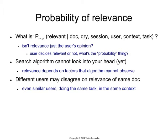Another way to think about how the probability arises is: you could have different users issuing the same exact query and having very similar-looking search sessions, but they could disagree on whether any particular document is relevant to their information need or not. So that's a factor that a search engine cannot control. One way to think about what the probability of relevance means is: out of the population of users who run these queries and look at these set of results, how many of them would judge a particular document as relevant and how many would judge it as non-relevant? That's your probability of relevance.